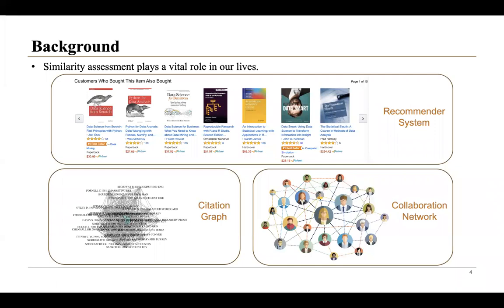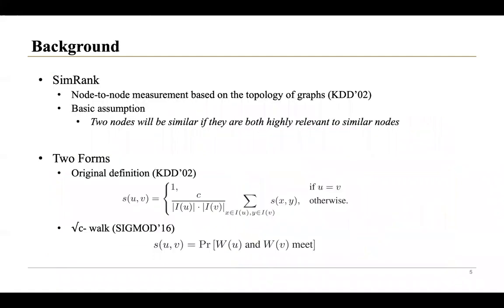First, background. Similarity assessment plays a vital role in our lives. For example, in these graphs, we can assess the similarity of nodes to further recommend items, find communities, or some other applications. SimRank is a significant metric to measure the similarity of nodes in graph data analysis. It is used to measure node-to-node similarity based on the topology of graphs. The basic assumption is that two nodes will be similar if they are both highly relevant to similar nodes.